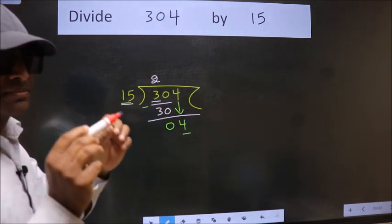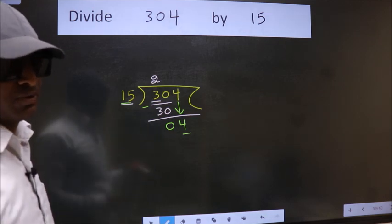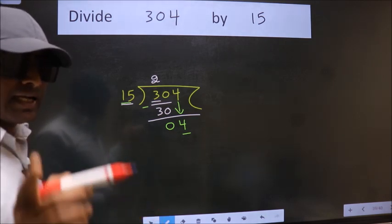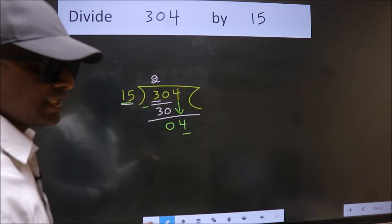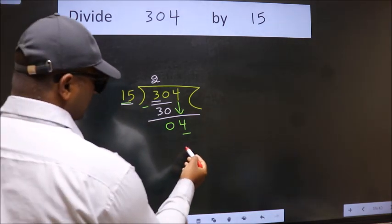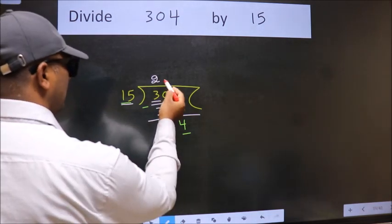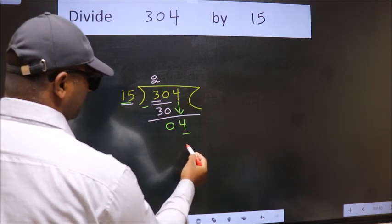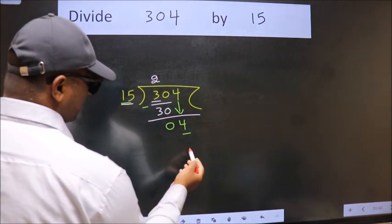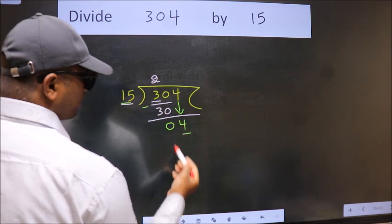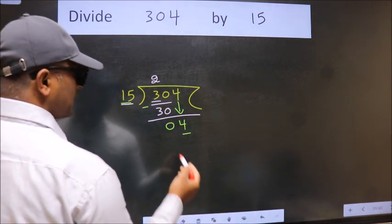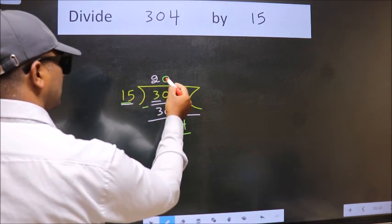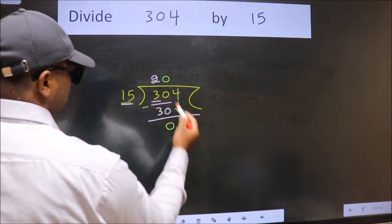Both at the same step—you should not do that. Instead, what we should think of is which number should we take here? If I take 1, we will get 15, but 15 is larger than 4. So what we do is take 0 here. So 15 into 0 is 0.